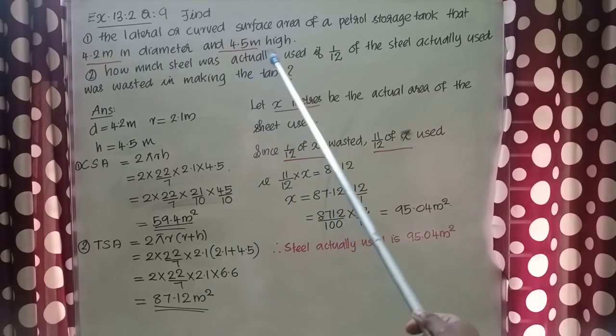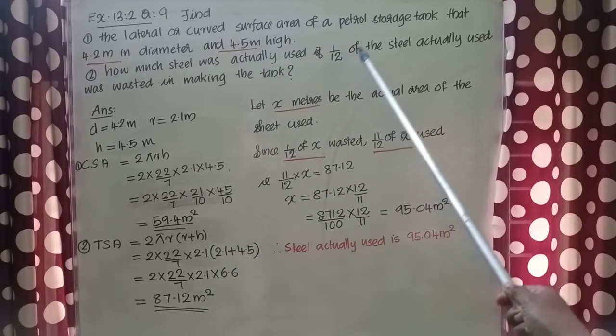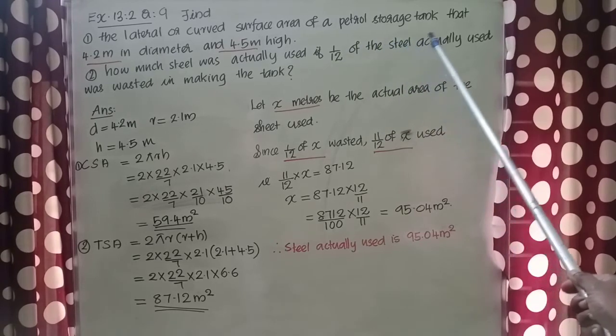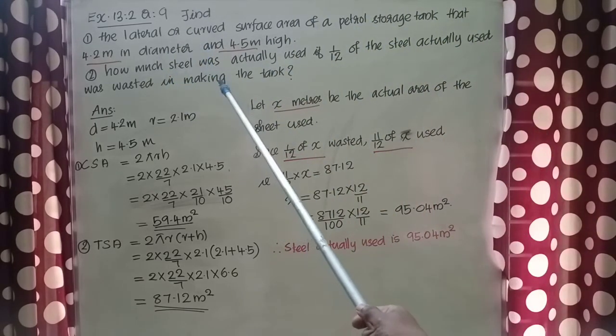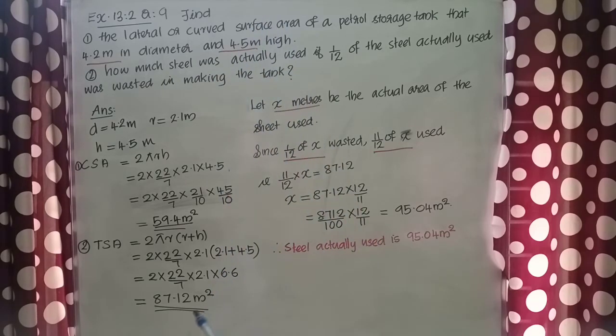Here it is given 1 by 12 of the steel actually used was wasted in making the tank. Actually, we need only 87.12 meter square steel to make a closed cylindrical tank. We need to find out what is the total area of the steel.